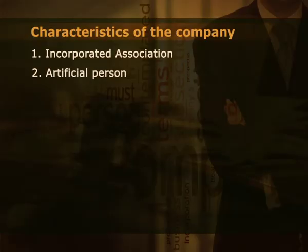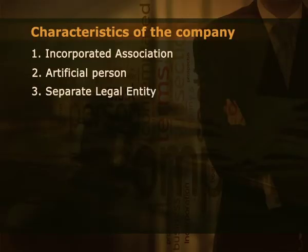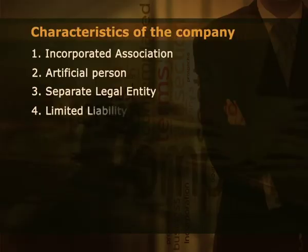Second, artificial person. It is an artificial legal person enjoying the same rights and owing the same obligations as a natural person. Third, separate legal entity. A company is separate and distinct from the persons who constitute it. Fourth, limited liability. The liability of its members is limited to the unpaid value of the shares held by them or the guarantee given by them.